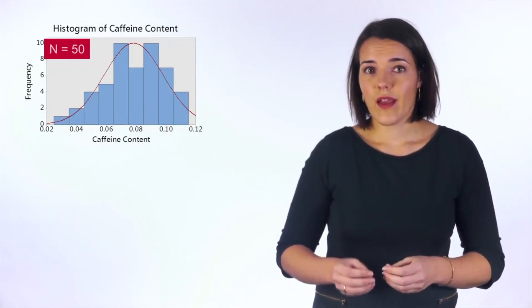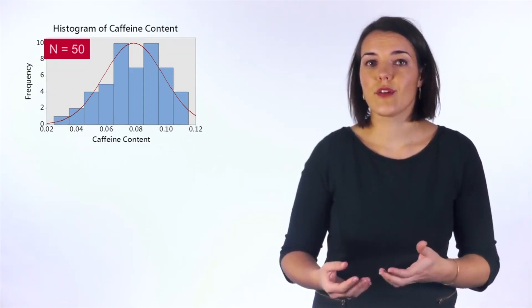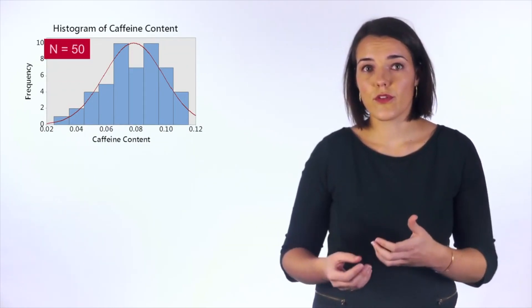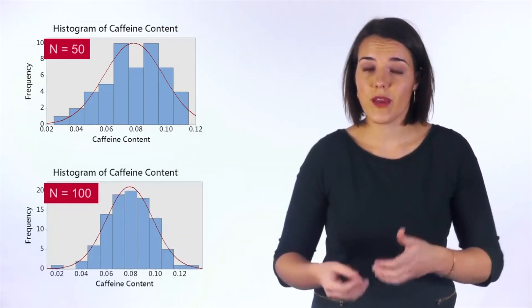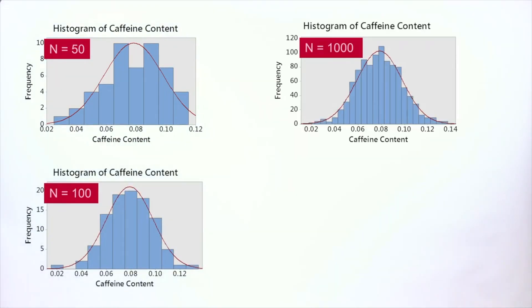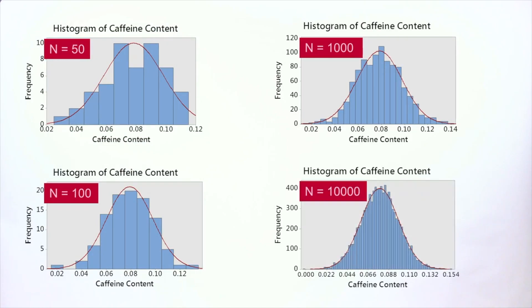However, as the number of measured values becomes larger, the distribution converges more and more to this bell shape. The more n increases, the more it starts to look like a bell shape.